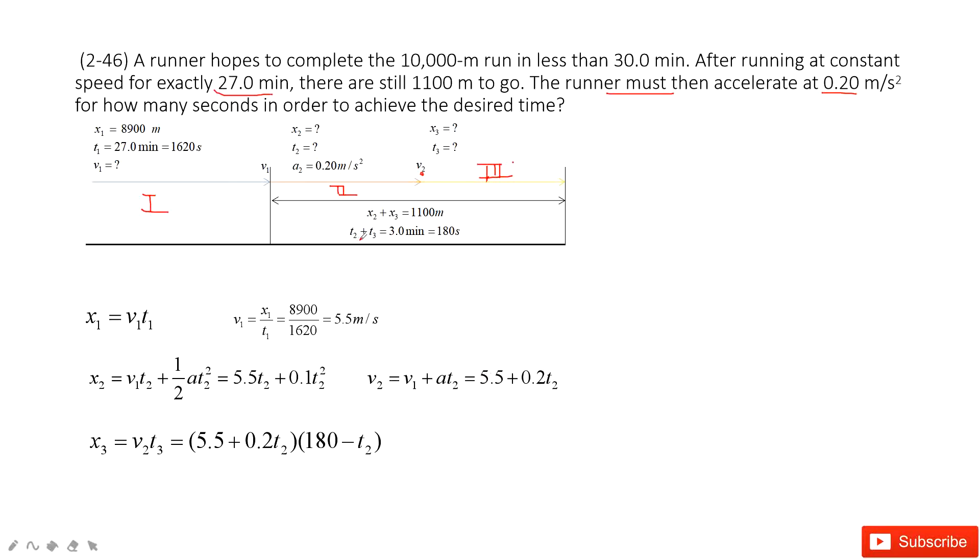And because t2 plus t3 is 180 seconds, we write t3 as 180 seconds minus t2. Now we have these two equations, and x2 plus x3 must satisfy this equation. So x2 plus x3, we put these two equations together, must equal 1,100.